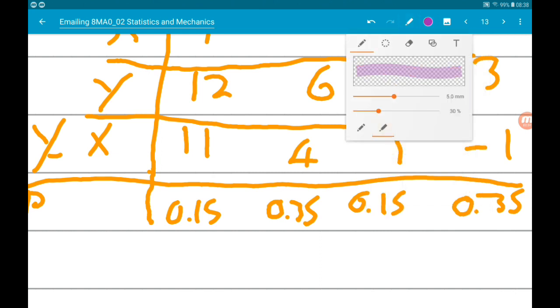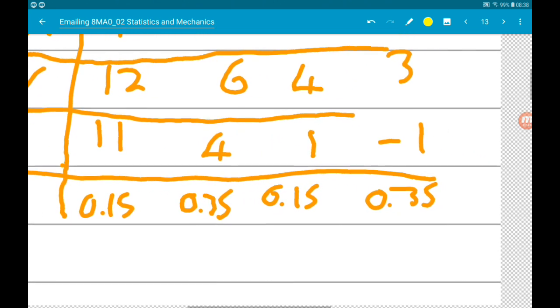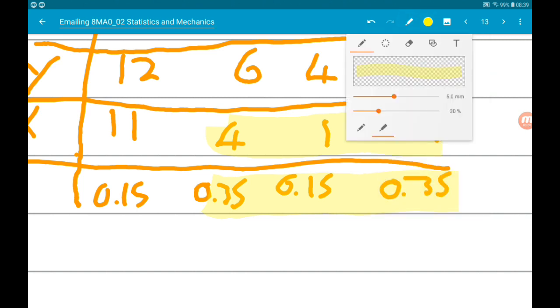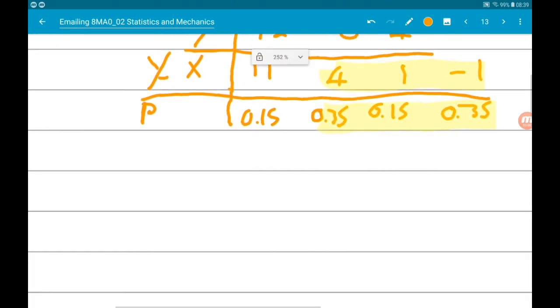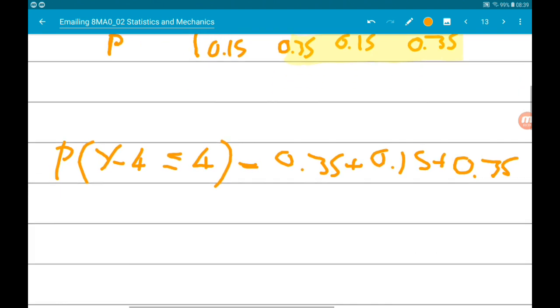The outcomes that we are interested in are, for Y minus X, we wanted Y minus X to be less than or equal to 4, so we're interested in those three. So we just add those probabilities together. So the probability that Y minus X is less than or equal to 4 is equal to 0.35 plus 0.15 plus 0.35, and that is going to give us 0.85.